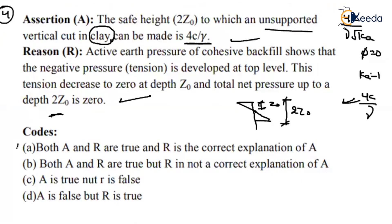So what is the correct option here? Both A and R are true, and R is the correct explanation of A. From this relation, we are getting 4C by gamma, isn't it? That's why R is the correct explanation of A. Thank you.